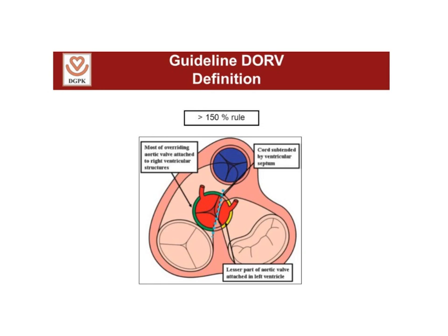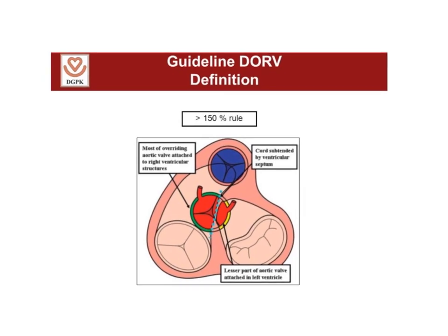This picture is a short axis view. To call it a double outlet right ventricle as compared to a tetralogy of Fallot, you need to have at least 50% override of the aorta. You can see where the override is, and it has to be at least 50%. So when you're looking at it, if the aorta is not quite 50% or less, then most likely you're looking at a tetralogy of Fallot rather than a double outlet right ventricle.